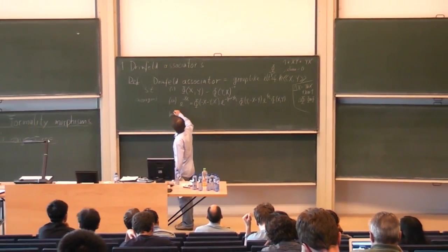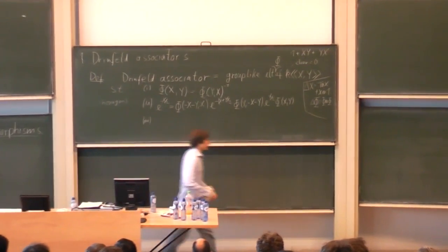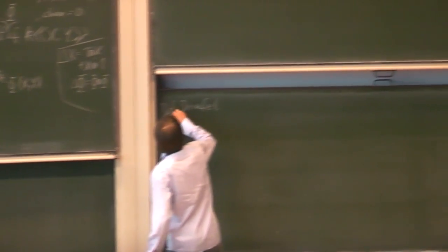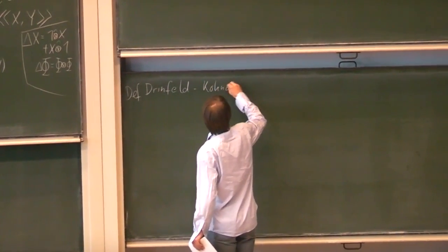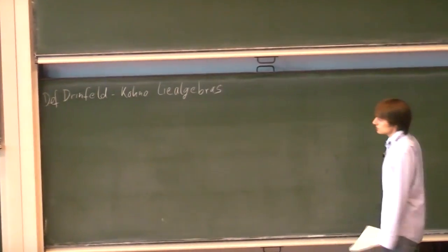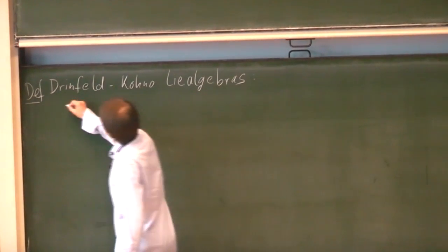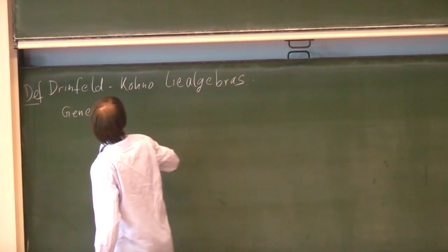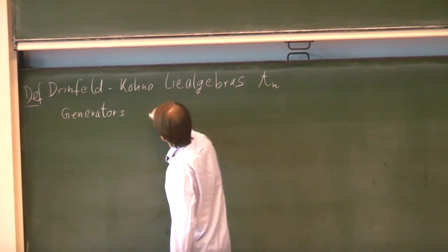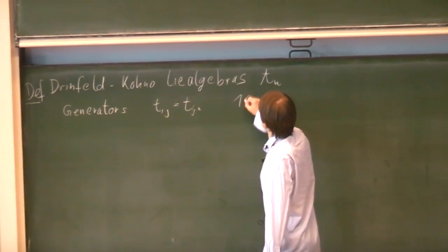There is a third equation, which is even more complicated to write down. To even state the third equation, I need to make another definition: the so-called Kohno-Drinfeld Lie algebras, given by the following presentation. They have generators T_ij, where T_ij is considered the same as T_ji, for i and j between 1 and N.